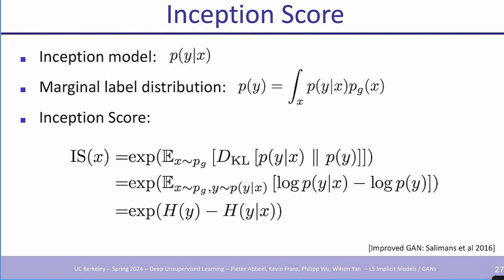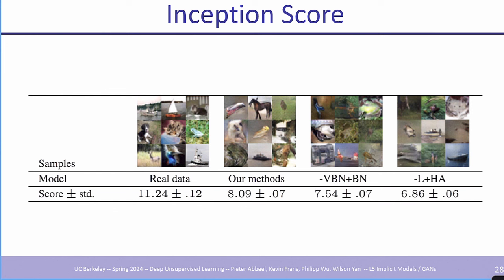Given 285 slides to cover, I'll let you read the derivation yourself. People would eyeball results and also check the Inception score to see if improvements align. Real data has an Inception score of 11.24; a GAN paper at the time achieved 8.09, indicating room for improvement but better than previous unsupervised methods.